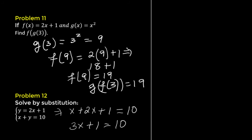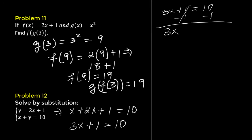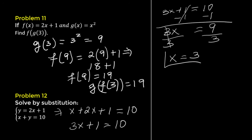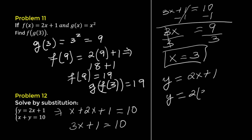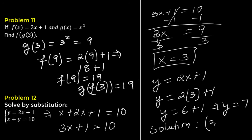3x plus 1 equals 10. Subtract 1 from both sides: 3x equals 9. Divide by 3: x equals 3. Substitute x into the first equation: y equals 2 times 3 plus 1, giving y equals 6 plus 1, which is 7. The solution to the system is 3 comma 7.